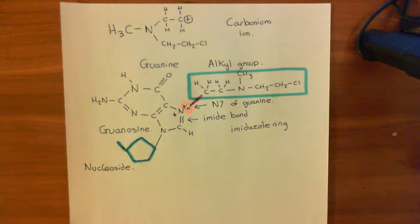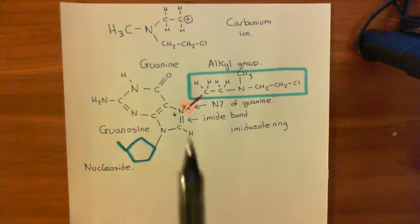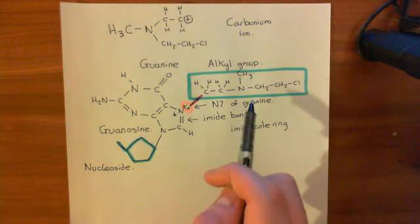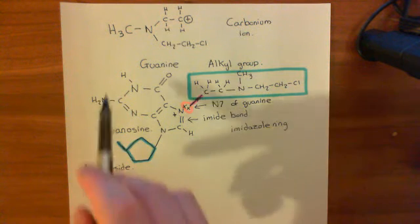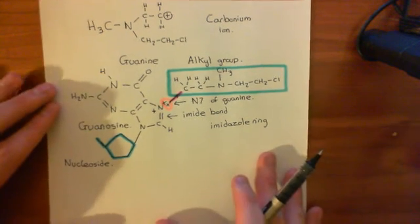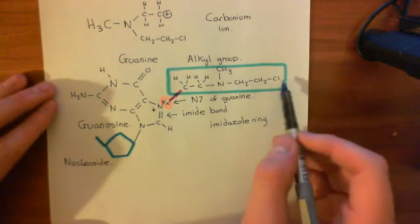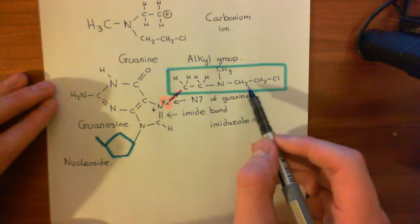Welcome to this next video in which we're discussing the nitrogen mustards as an example of anti-cancer chemotherapeutic agents. We discussed how we've now added the alkyl group of the nitrogen mustard drug onto a guanine organic base within our DNA strand. I also alluded at the end of the previous video that the other chloroethyl group could go through the exact same reaction, so let's expand on that now.